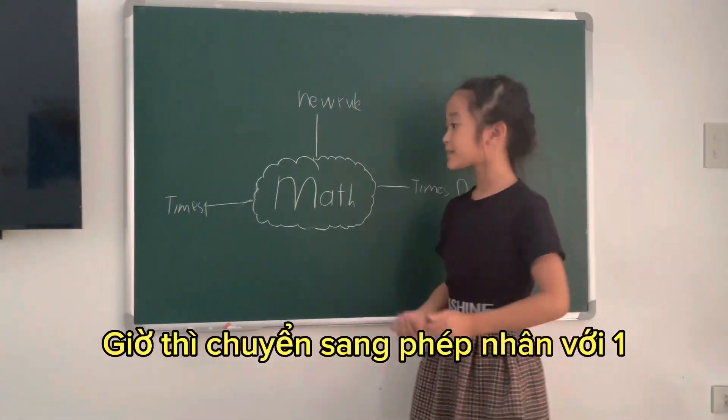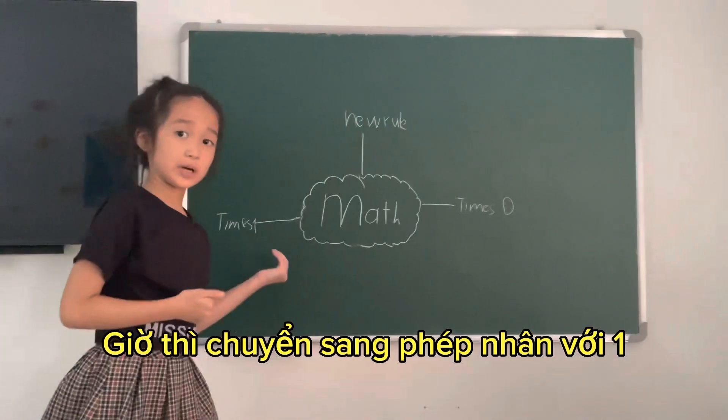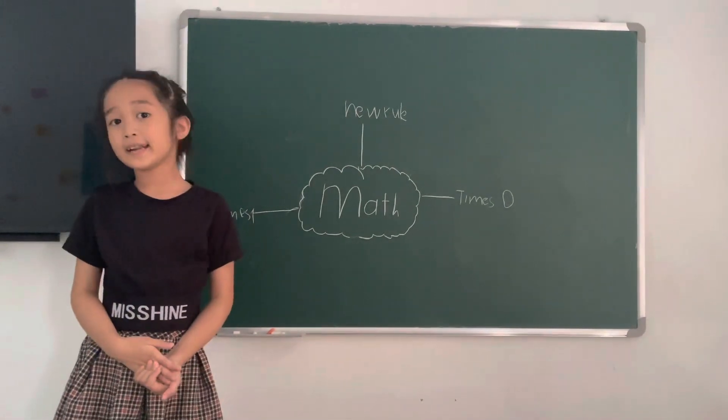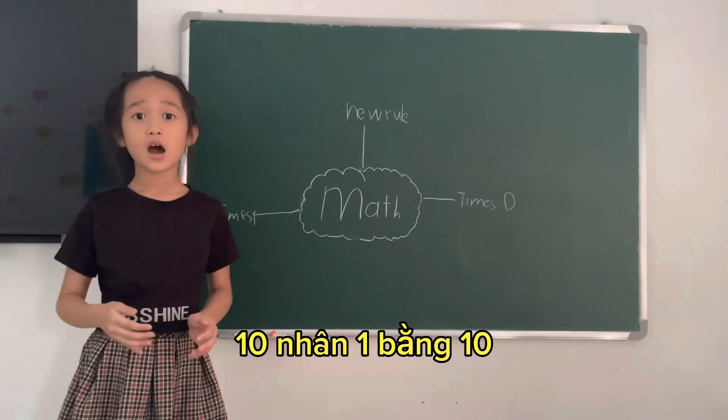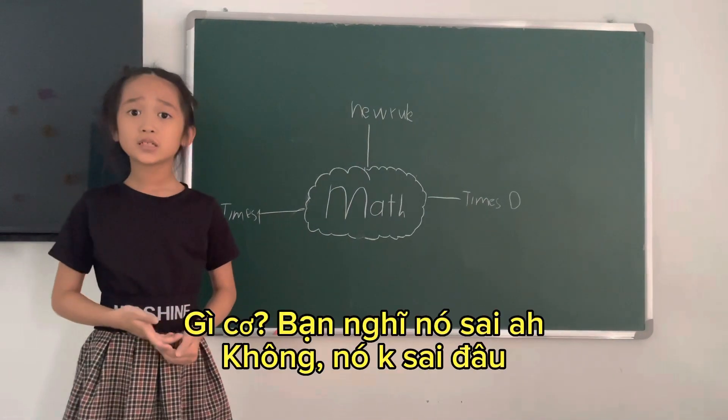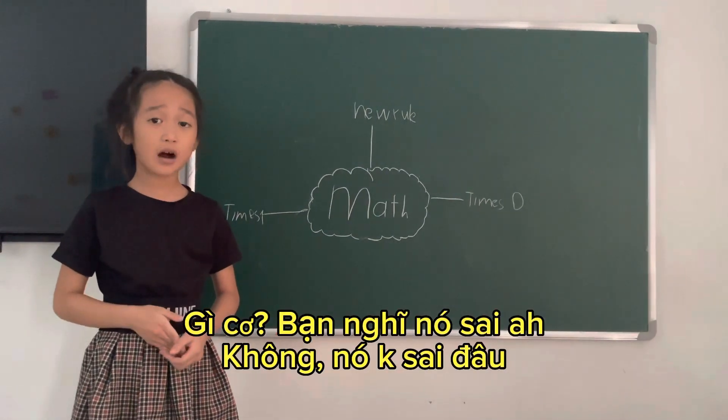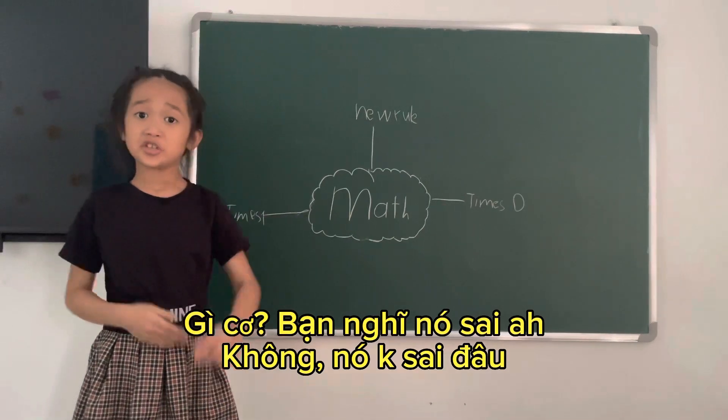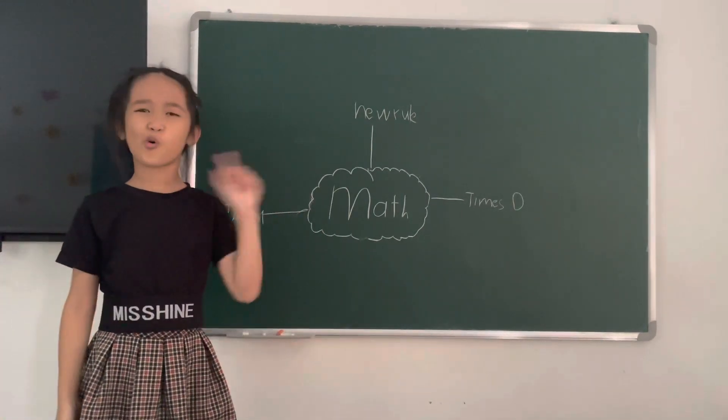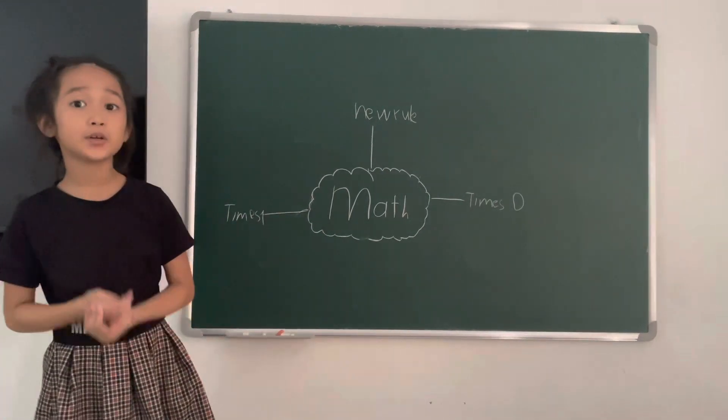Now let's go to times one. Ten times one equals ten. What? Do you think it's wrong? No, it's not wrong. Do you think it's eleven? No. So let me tell you a story.